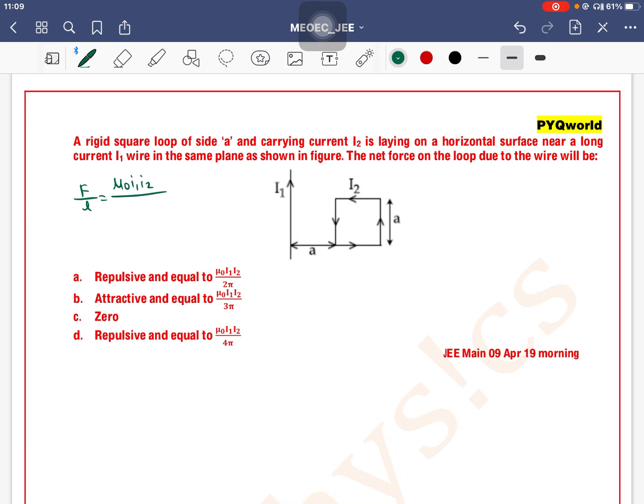The formula is mu0 i1 i2 divided by 2 pi d, where d is the distance between the two conductors and l is the length of the conductor on which force is acting. If current is in the same direction, then attraction occurs. If current is in the opposite direction, then repulsion occurs.